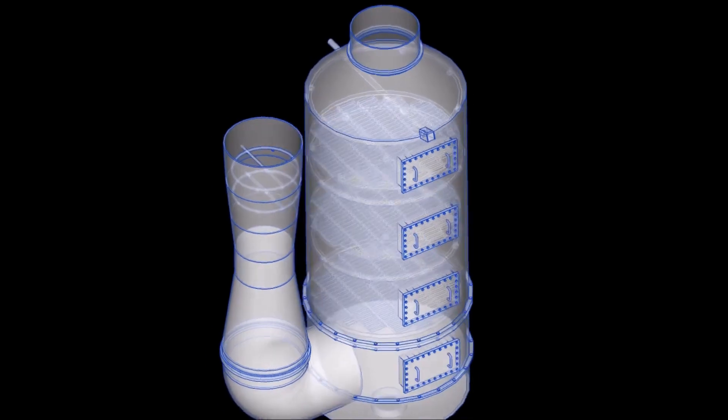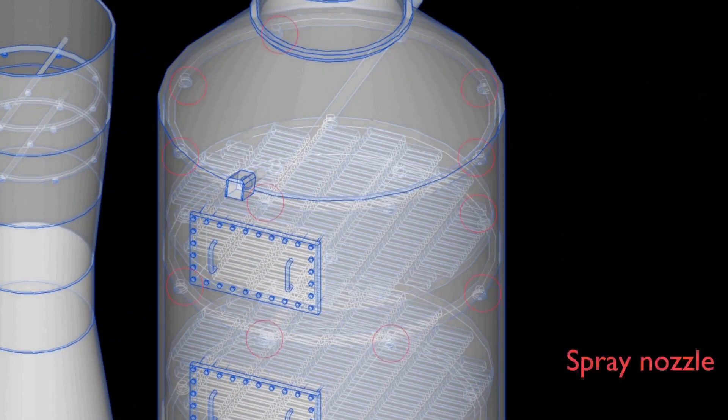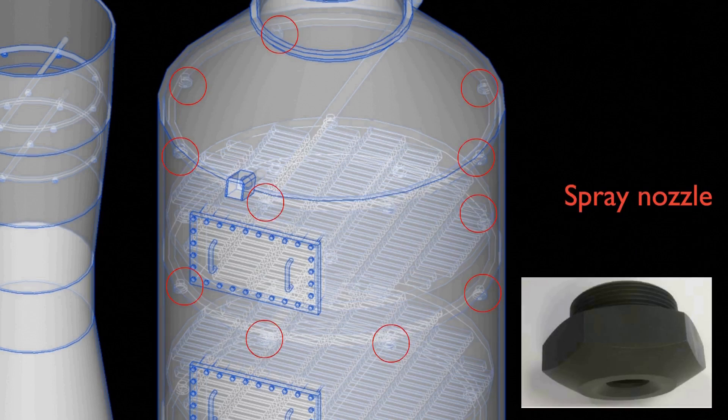Inside the tower are sets of nozzles that spray sea water to the exhaust gas. Three sets on the main chamber and another two sets on the venturi.